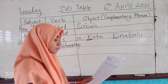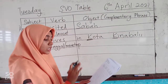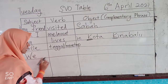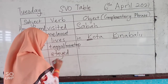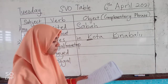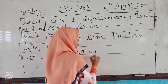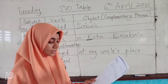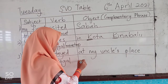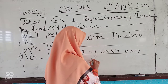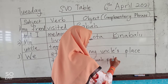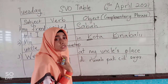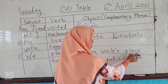And then sentence number 3: 'We stayed at my uncle's place.' The subject is 'we' — kami. The verb is 'stay.' And then the object or complementary phrase is 'at my uncle's place.' Di rumah pakcik saya. 'My uncle's' means 'saya punya pakcik' — pakcik saya. 'Place' di sini dia maksudkan rumah lah.